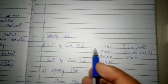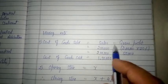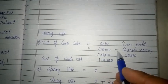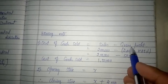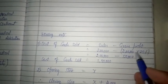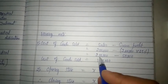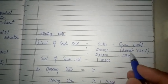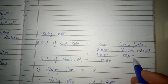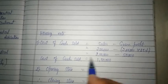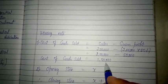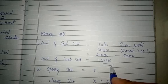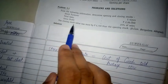Working Note 1: Cost of Goods Sold = Sales minus Gross Profit. Sales are given as 2,00,000 rupees and gross profit is 25% of sales, so 2,00,000 minus 25% of 2,00,000 equals 50,000. Therefore, cost of goods sold is equal to rupees 1,50,000.